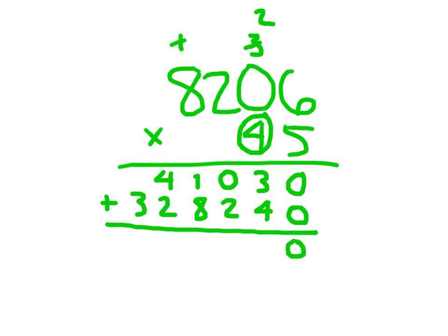Adding up: 0, 7, 2, 9, 6, 3. Place the comma, and 8,206 times 45 equals 369,270.